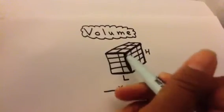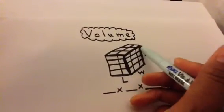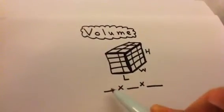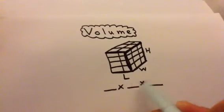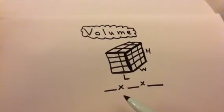This represents the length, the height, and the width. Now it doesn't matter if you put the length here, or the height here, or the width there. We're still going to be multiplying all three numbers.